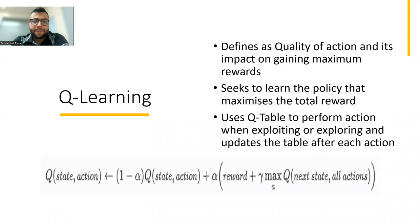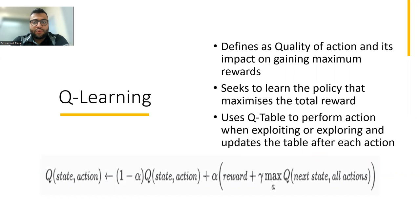What is Q-learning? Q-learning is defined as the quality of an action and its impact on gaining maximum rewards. In Q-learning, an agent seeks to learn the policy that maximizes the total reward. It uses a Q-table to perform actions when exploiting or exploring, and updates the table after each action.